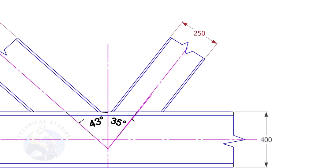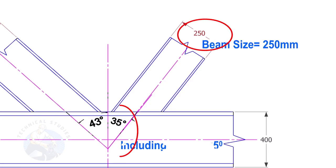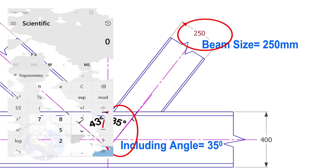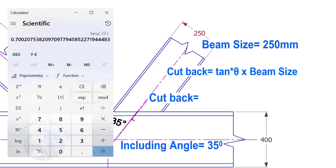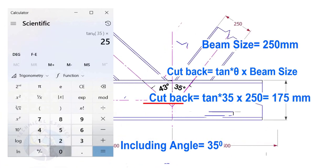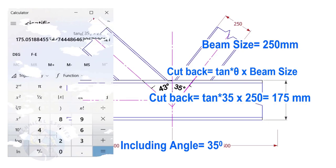Here, the size of the beam is 250 and the including angle is 35. Let us calculate the cutback. The cutback for this beam is 175 millimeters.